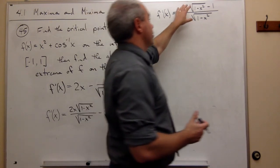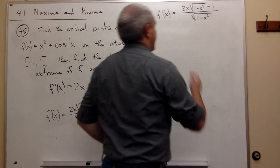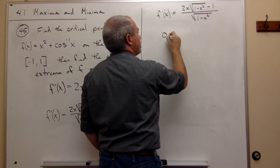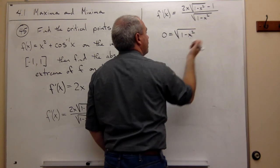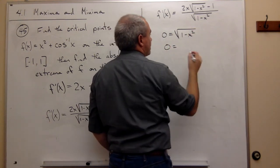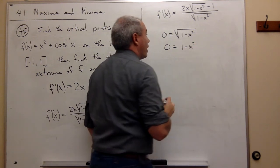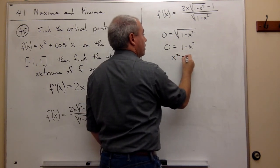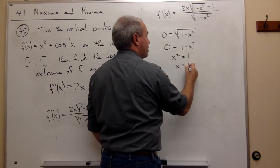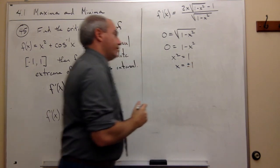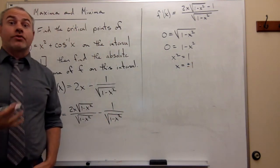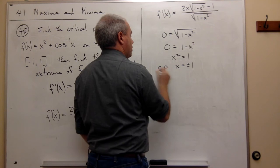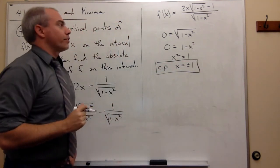Let's first look at the denominator. When is the square root of 1 minus x squared equal to zero? That means 1 minus x squared equals zero, so x squared equals 1, or x equals plus or minus 1. So plus and minus 1 are critical points in this problem. I'll box those in so we can remember them.